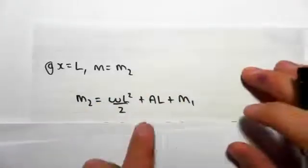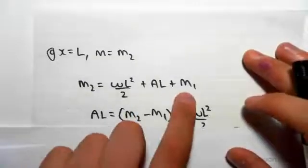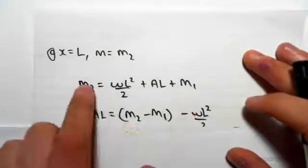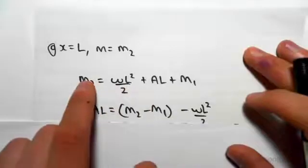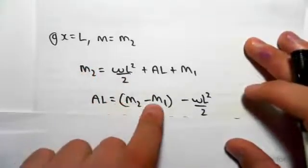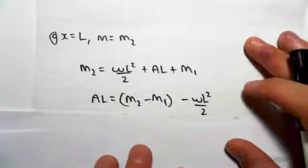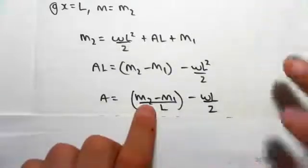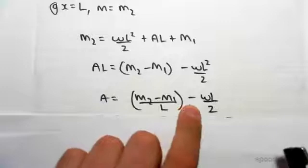So solving for this, subtracting M1 to this side and subtracting wL squared over 2 to that side, we would be left with AL equals M2 minus M1 minus wL squared over 2. Dividing through by L, we'd get A equals M2 minus M1 over L minus wL over 2.